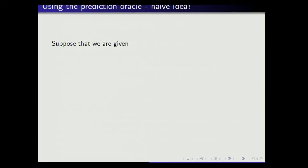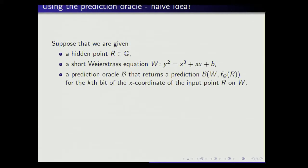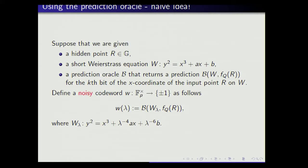Let me comment on how we use the prediction oracle. Given the hidden input R on the group and a short Weierstrass equation W, we plug the equation together with the output of the one-way function into the prediction oracle B to get the k-th bit of the x-coordinate of the point R on W. Using that, we define a codeword — a function from the multiplicative group to {+1, −1} — where at each coordinate λ, we change the Weierstrass equation to the isomorphic one W_λ and query the oracle on that equation. This gives a noisy codeword; I can access every bit of it, even though I cannot represent it efficiently since the domain is exponentially large.